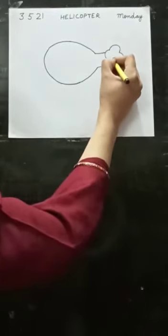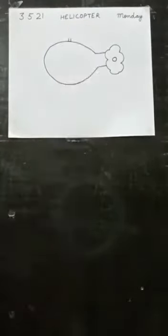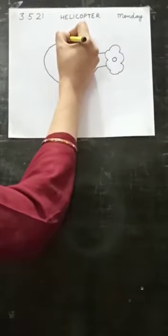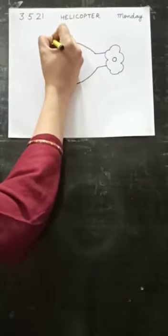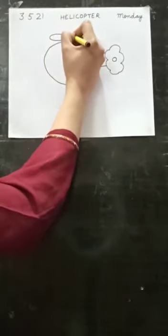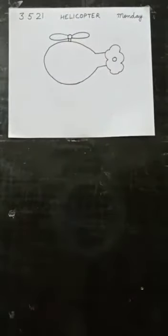And draw a small circle inside it. Now, you will draw two standing lines here. Then a circle. Then you will draw its blades like this. These blades help the helicopter to fly.